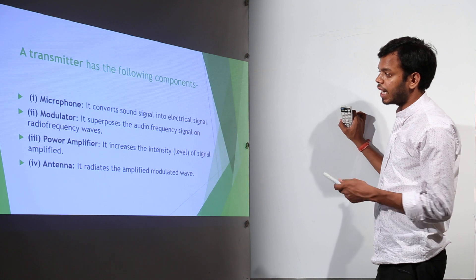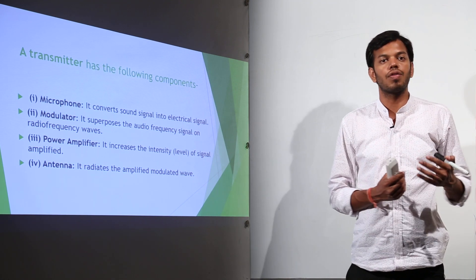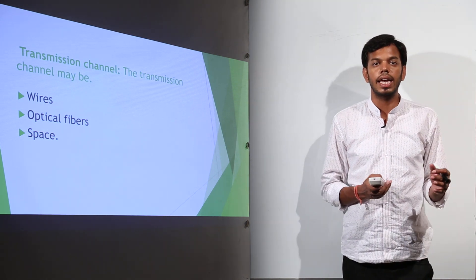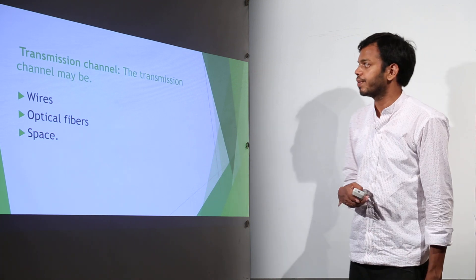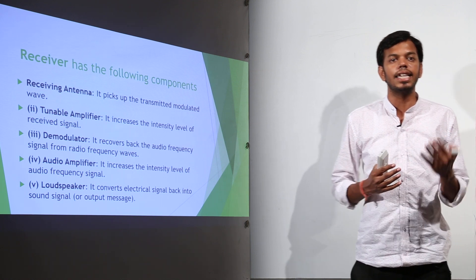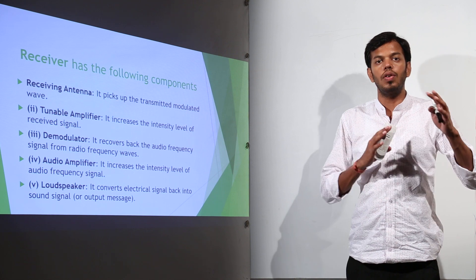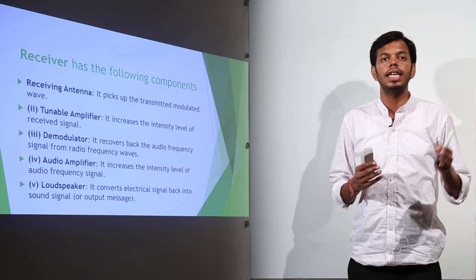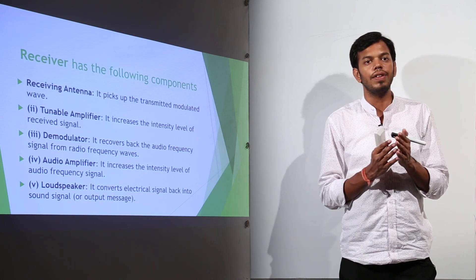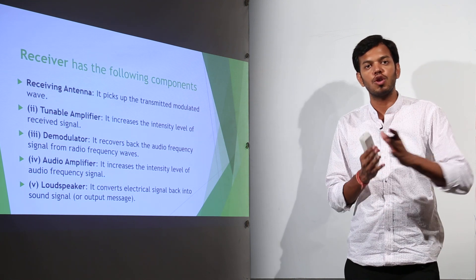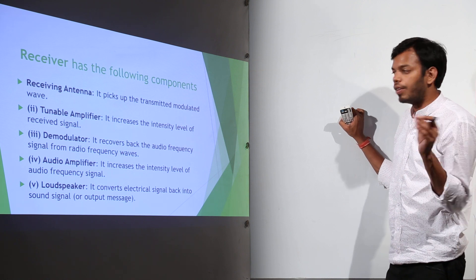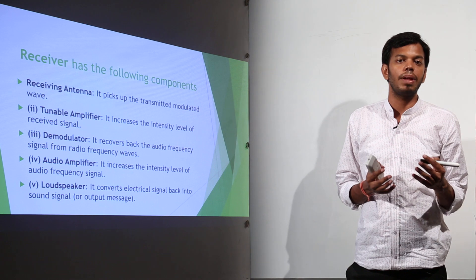The power amplifier gives energy so that signals can be transferred over long distances. The antenna is a device from which the signal is radiated. The transmission channel can be wires, optical fibers, or space — covered under wave propagation. On the receiver side, the antenna receives the signal, then a tunable amplifier increases its energy, because the signal has traveled a long distance and is very weak. After amplification, demodulation separates the signal from the carrier wave, since the message wave and carrier wave were superimposed when sent.